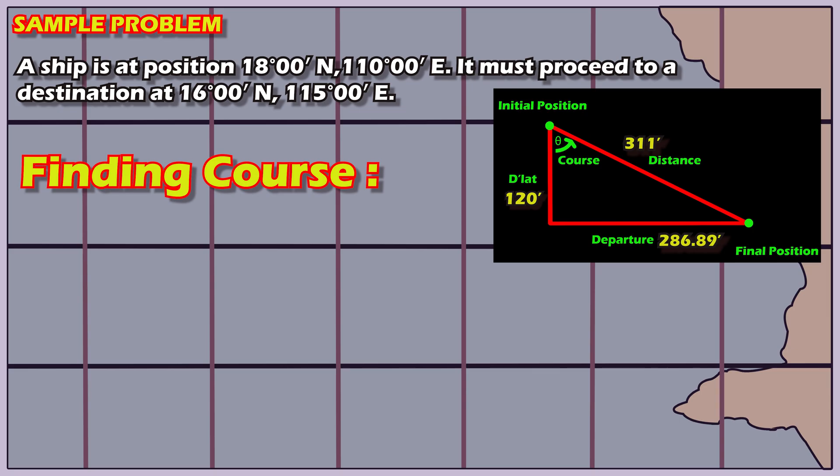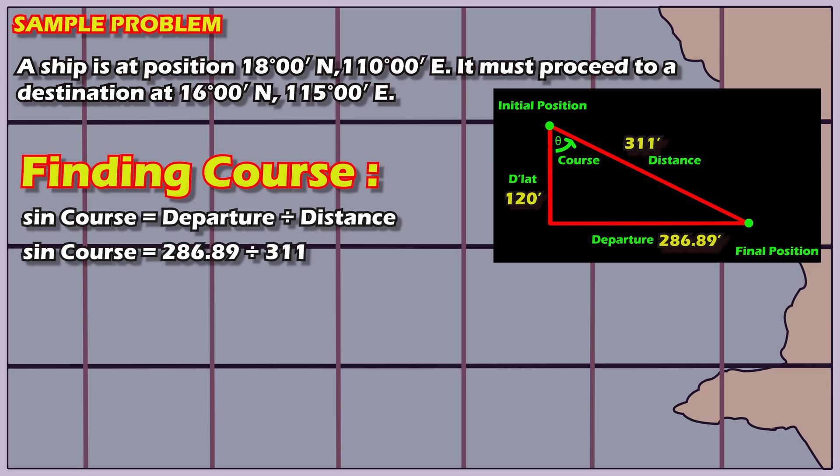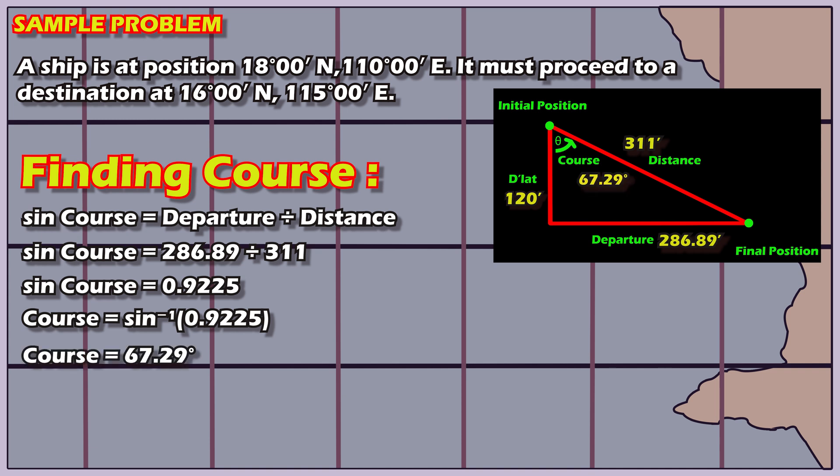Finding the course. Now that all sides of the triangle are known, we can use trigonometry. Here, we'll use the sine formula. Sine of the course equals departure divided by distance. That's 286.89 divided by 311. This equals 0.9225. Taking the inverse sine of 0.9225 gives us 67.29 degrees. But this is not yet the final answer.